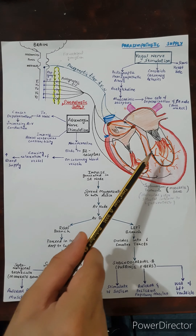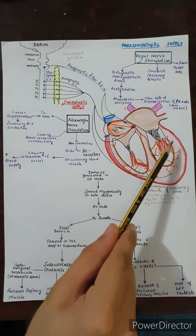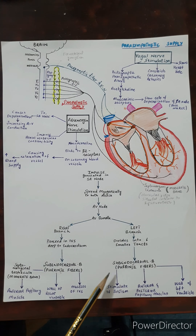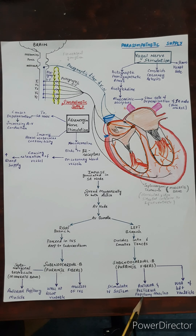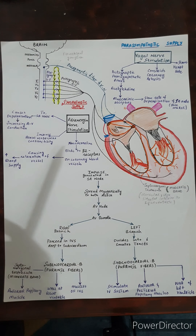The left branch divides into six smaller tracks. These smaller tracks then give rise to the Purkinje fibers. These Purkinje fibers stimulate the interventricular septum, the anterior and posterior papillary muscles, and the walls of the left ventricle.